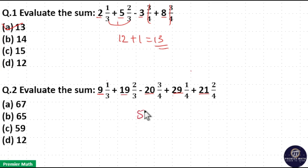So 50 plus 8 is 58, the integer sum. Now add the fractions. 1 by 3 plus 2 by 3 is equal to 1, and here 1 by 4 plus 2 by 4 is equal to 3 by 4.